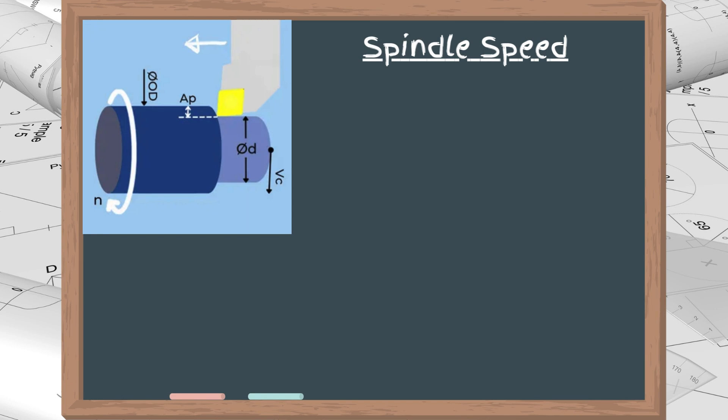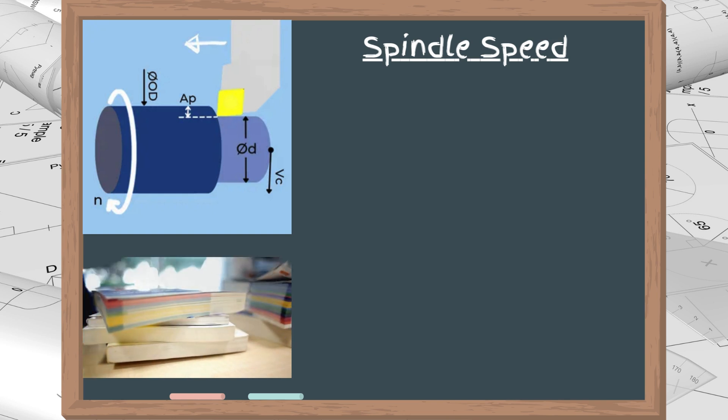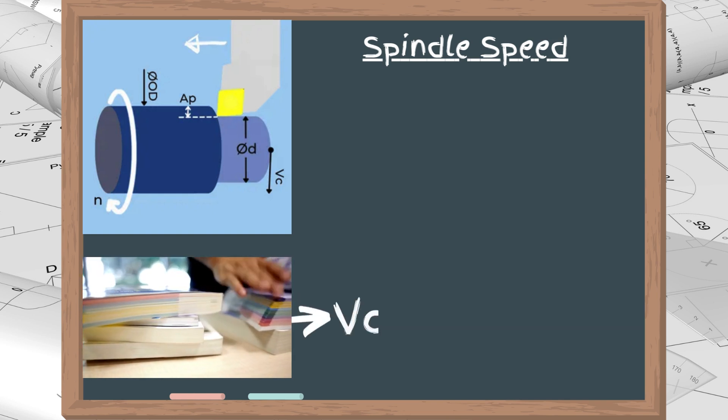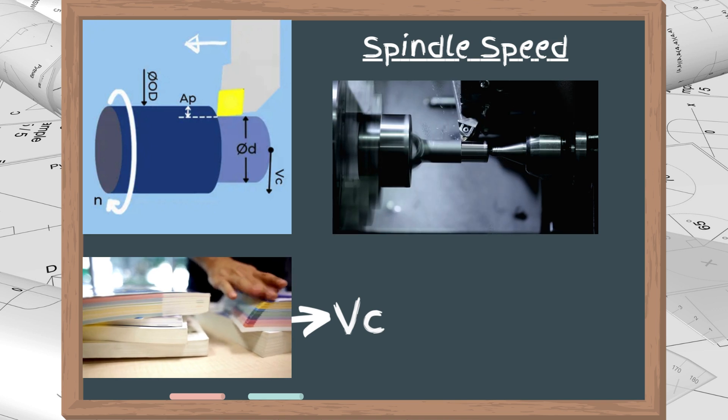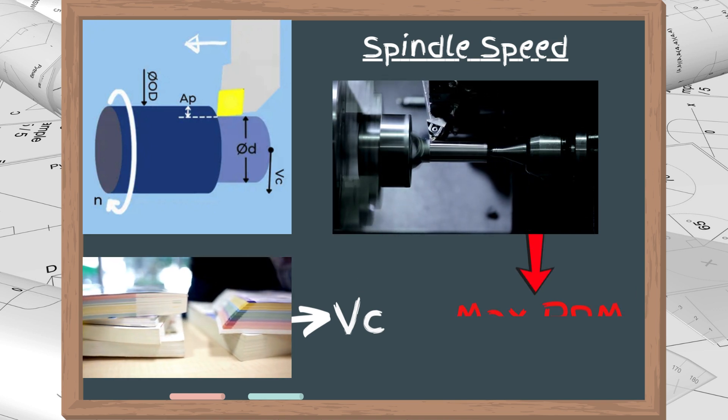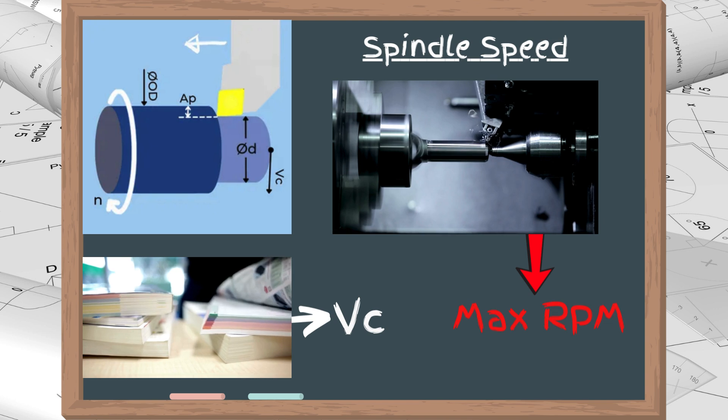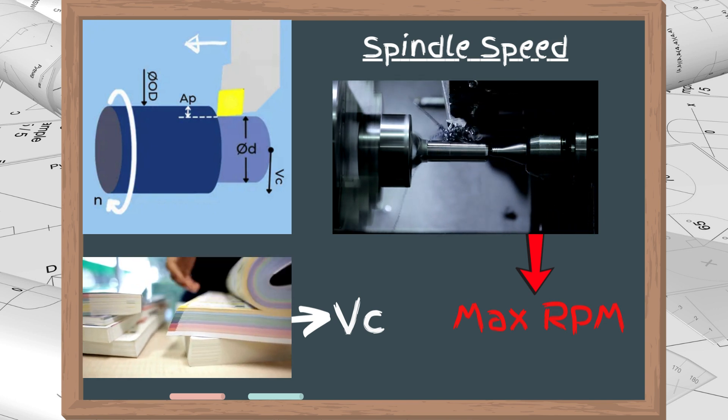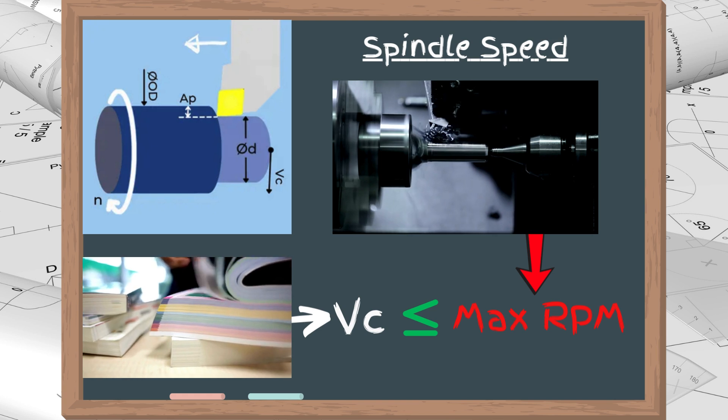Moving on to spindle speed calculation. The turning insert's catalog, or our experience, tells us the cutting speed for a given application. On the other hand, the CNC lathe is limited by its maximum spindle speed. Therefore, we commonly need to compute the spindle speed out of a given cutting speed to ensure that the speed we want to run at is within the machine's limit.